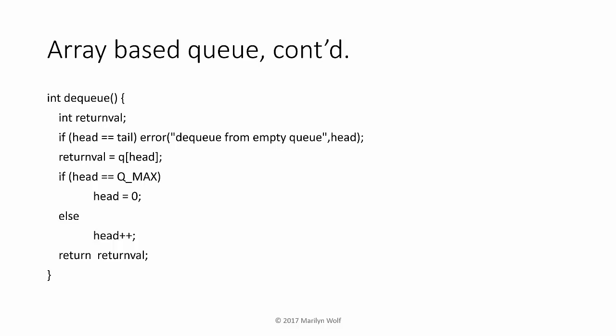Here's C code for the dequeue function that removes a piece of data from the queue. Once again, we update the pointers in a circular fashion. Because the amount of data can vary, we want to also implement two checks. We want to know if the buffer is full and we're trying to add more data to a full buffer. We also want to know if we're trying to remove data from an empty buffer.